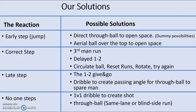We can still play the space behind them, but we're going to need more people involved — maybe a third man run, a delayed one-two. Or often teams will just try it again: they'll circulate the ball, switch field, trade positions, reset the runs, have different guys make runs, and go again and again until the defense makes an incorrect reaction, and then they'll go.